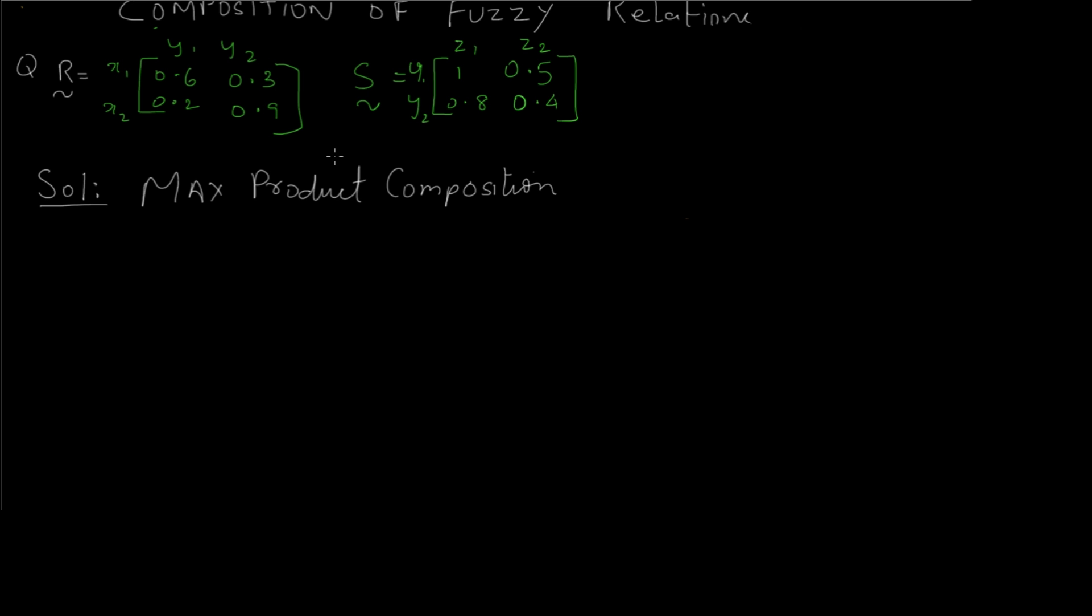As you can see on the screen, I've written the question and we have to solve this and find the composition T equals R∘S using max product composition. Let's find out for the first element and I'll show you how to go about it.